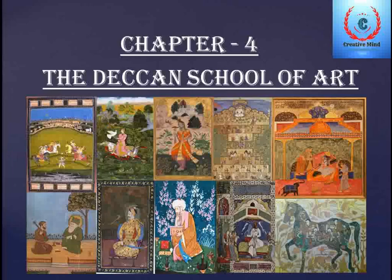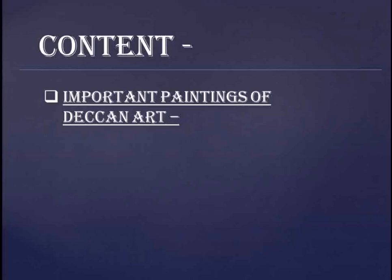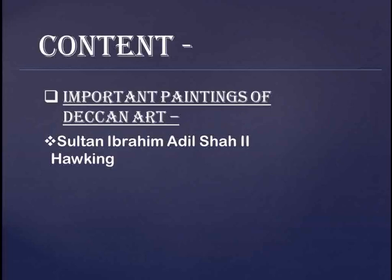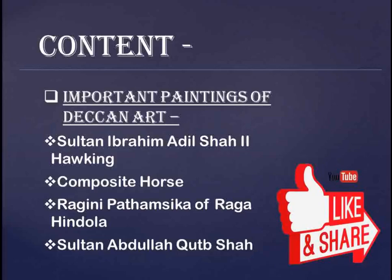Hello everyone, welcome back to my channel Creative Mind. This is chapter number four of class 12 NCERT-based content, and the chapter name is the Deccan School of Art. In this video we will cover the important paintings of Deccan Art — specifically the first four paintings, including Sultan Ibrahim Adil Shah 2nd Hawking, Ragini Pathhamsika of Rag Hindola, and Sultan Abdullah Qutb Shah.